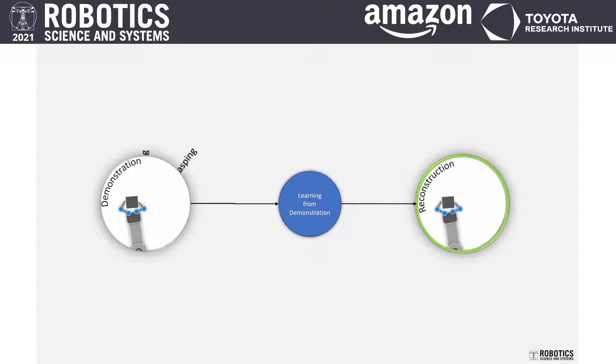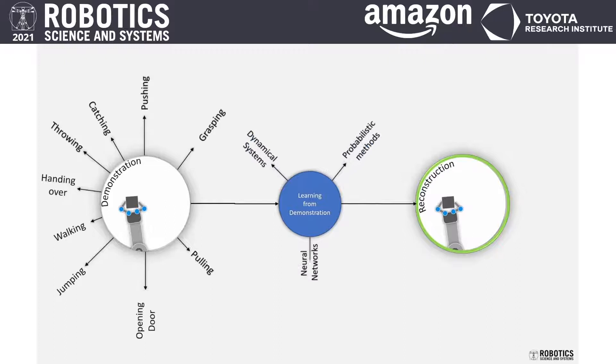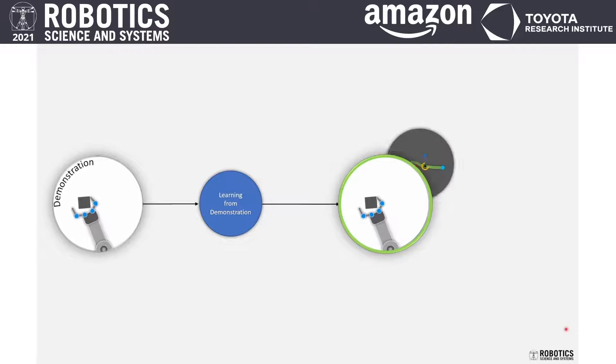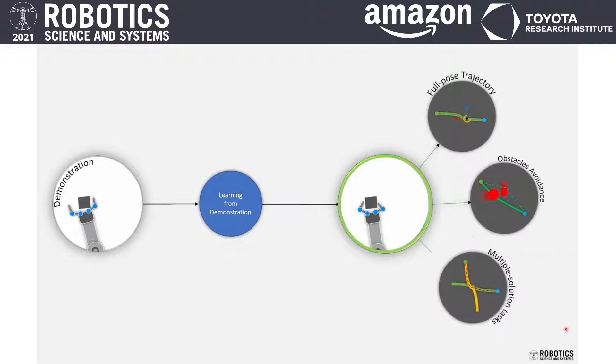We use learning from demonstration to be able to reproduce robot motion as simple as grasping or as hard as opening doors or walking. There are several methods based on dynamical systems, neural networks, and probabilistic methods that can provide a platform to learn these skills. Regardless of the approach, the learning methods should be able to deal with full-pose trajectory learning, changes in the environment like obstacle avoidance, and multiple solution trajectories.